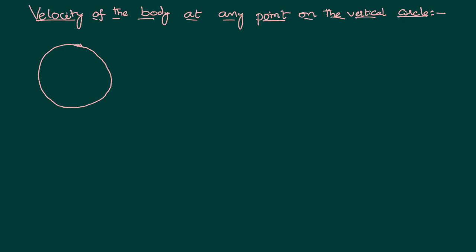Consider a body of mass M attached to a string of length R, rotated about a point O in vertical circular motion against gravity. The velocity at the bottom is V1. We want to calculate the velocity of the same body as it moves in an anti-clockwise direction at a particular point P, which makes an angle theta with the initial position.